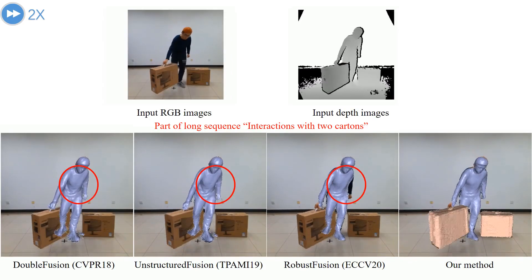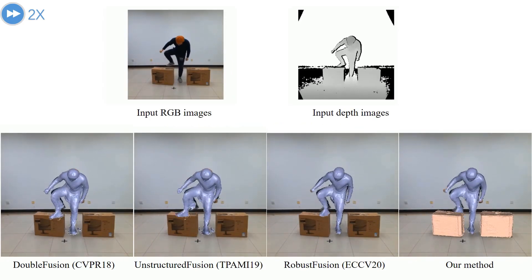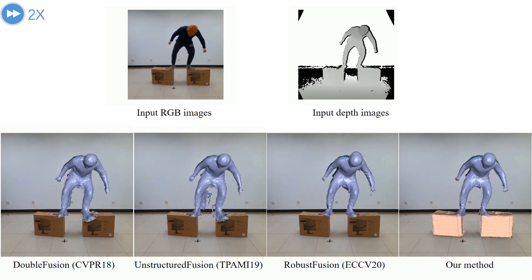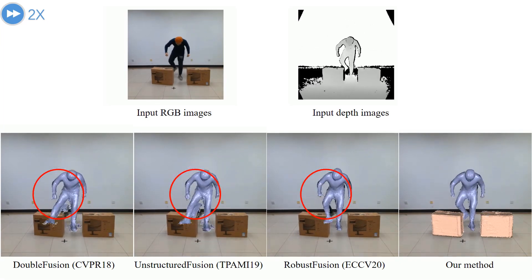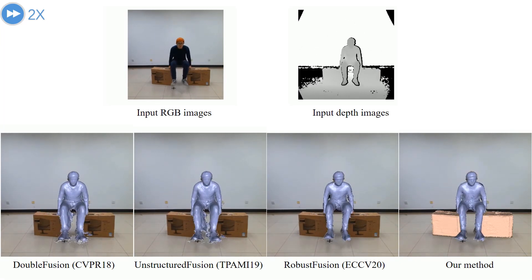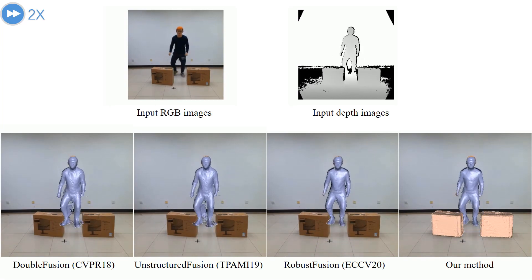We also compare against Robust Fusion from ECCV 2020. It is robust to fast motions but still suffers from severe occlusion, leading to wrong tracking results in the limb regions.